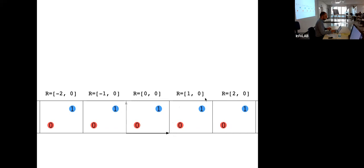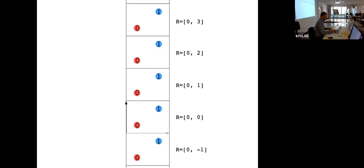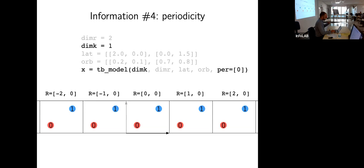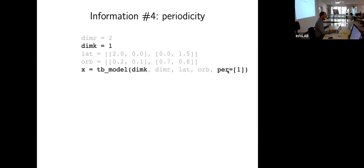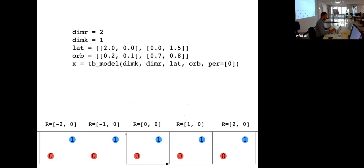This R-vector convention is also what we will be using. If periodicity is along the horizontal vector you get one model; if it's along the second vertical vector, the system is repeated along the vertical axis, and the unit cells have indices 0,0 — 0,1 — 0,2 — 0,3 and so on. So up to now these five lines specified this infinite model, with the orbitals, their locations, and the periodicities.